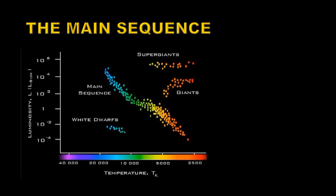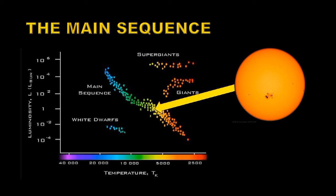So let's take another look at the main sequence. This diagram, by the way, is called the Hertzsprung-Russell diagram after the scientists that developed it. Most of the stars lay on this main sequence, with the super giants and giants laying above it, and the white dwarfs laying below it.